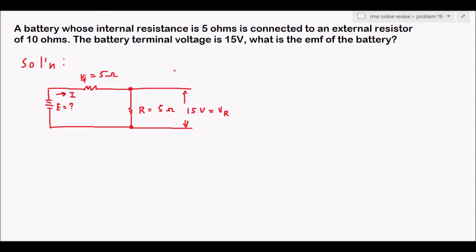We need to solve for E, the EMF. We go back to our Ohm's law triangle: E = I × R. Since this is a series circuit, R here is the total resistance Rt. We can find Rt as the sum of the internal resistance and the 10-ohm resistance. However, we cannot directly find I without more information.